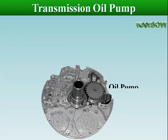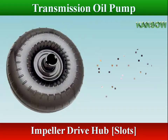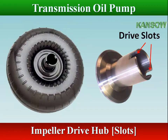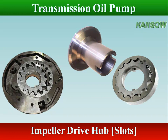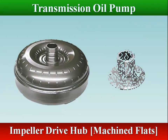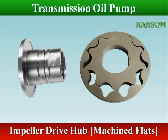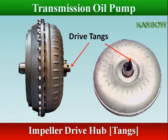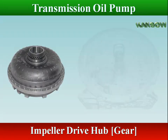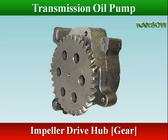The transmission oil pump is driven by the torque converter when the engine is running. The pump driving member is engaged by tangs on the impeller hub, or machine flats, or by slots. In some automatic transmissions, the pump has a driving gear engaged by a gear on the impeller hub.